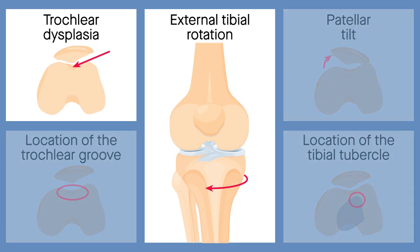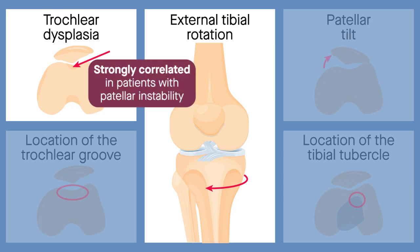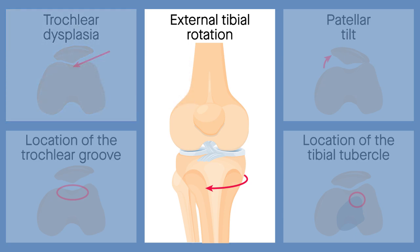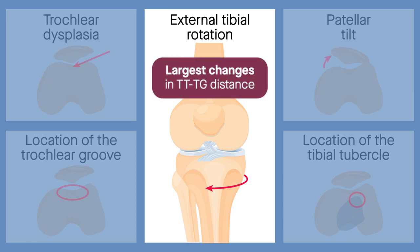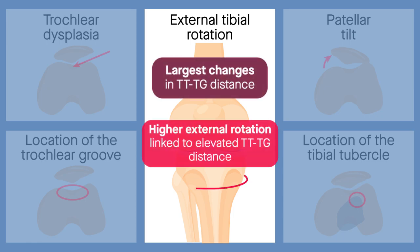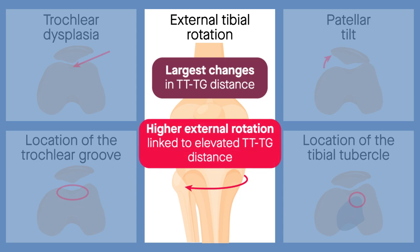Analysis revealed that external tibial rotation and trochlear dysplasia were strongly correlated in patients with patellar instability. In fact, among all variables analyzed, external tibial rotation was associated with the largest changes in TT-TG distance, with higher external rotation being linked to an elevated TT-TG distance.